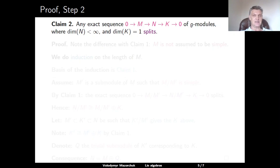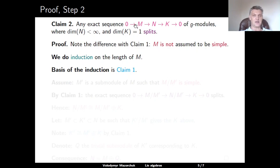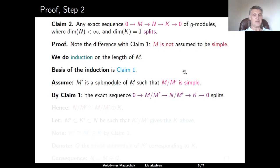Step two is a claim that any short exact sequence of finite-dimensional G-modules where the right term is trivial splits. The difference with claim one is that we no longer assume that the left term is a simple module. We do induction on the length of the left term. The basis of the induction is the case when the left term is simple, which is covered by claim one. To do the induction step, assume that we have a submodule M' of the left term M, such that the quotient M over M' is simple.